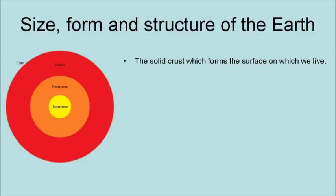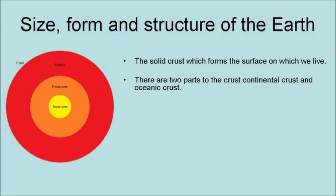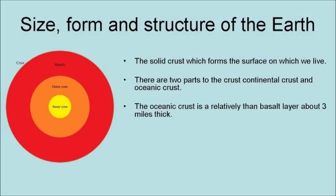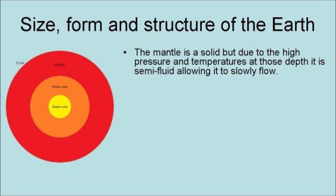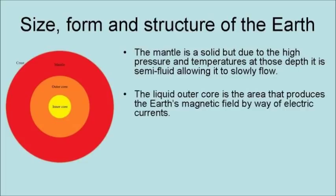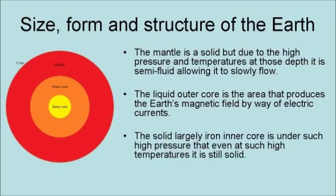There is the solid crust which forms the surface on which we live. There are two parts to the crust: the continental crust and the oceanic crust. The oceanic crust is a relatively thin basalt layer about three miles thick. The continental crust essentially consists of sediment-covered granite slabs that go to an average depth of 22 miles or 35 kilometers, forming deep foundations. The mantle is solid, but due to the high pressure and temperatures at those depths, it is semi-fluid, allowing it to slowly flow. The liquid outer core produces the Earth's magnetic field by way of electric currents. The solid, largely iron inner core is under such high pressure that even at such high temperatures, it is still solid.